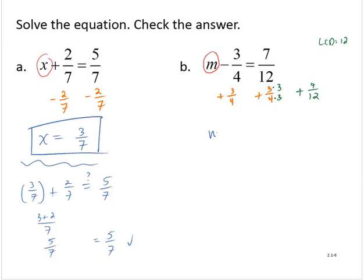And so then we have m is equal to 7 twelfths plus 9 twelfths, 16 twelfths. And reducing the fraction, m is equal to 4 thirds.